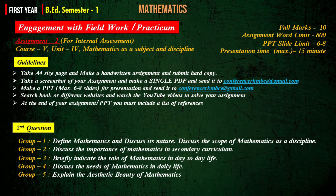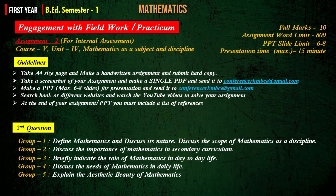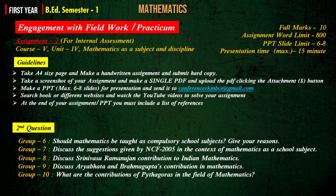The second assignment is a group presentation. Take an A4 size page, make a handwritten assignment, and submit a hard copy. Make a single PDF and send it to conferencerkmbc@gmail.com. Each group has to submit a PowerPoint presentation of maximum six to eight slides and send it to conferencerkmbc@gmail.com. The assignment word limit is 800 and maximum presentation time per group is 15 minutes. Include a list of references at the end. Each group will contain maximum five students, divided by random sampling or lottery method into 10 groups in the classroom.